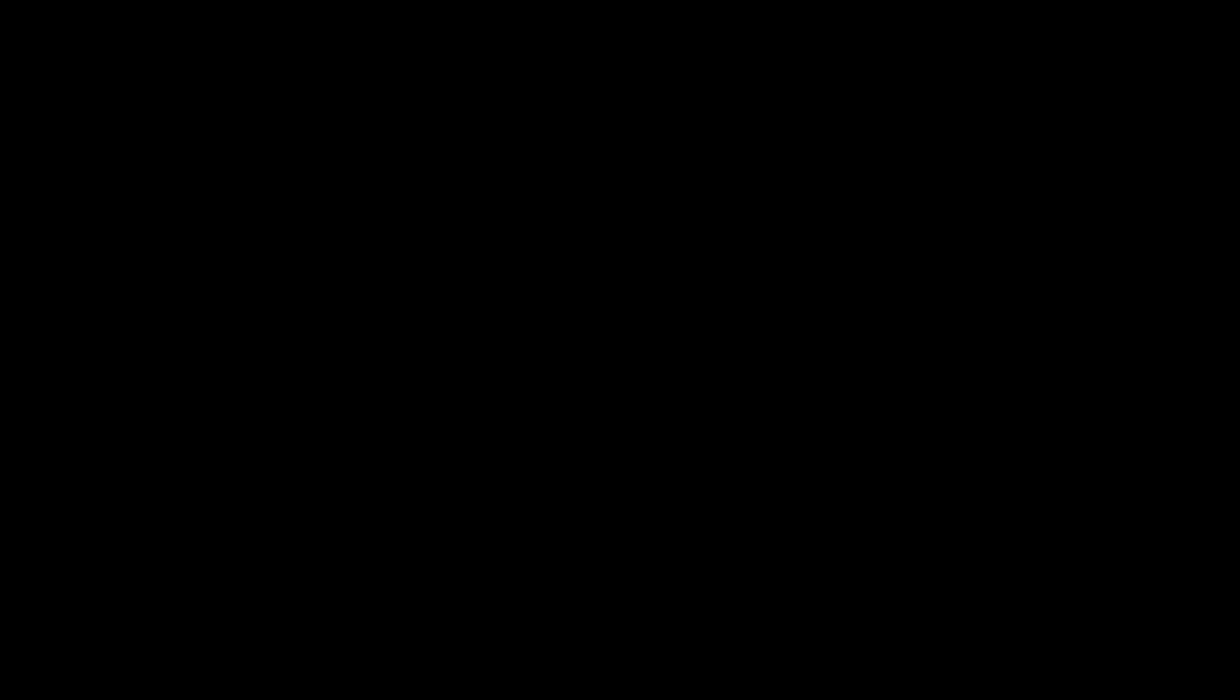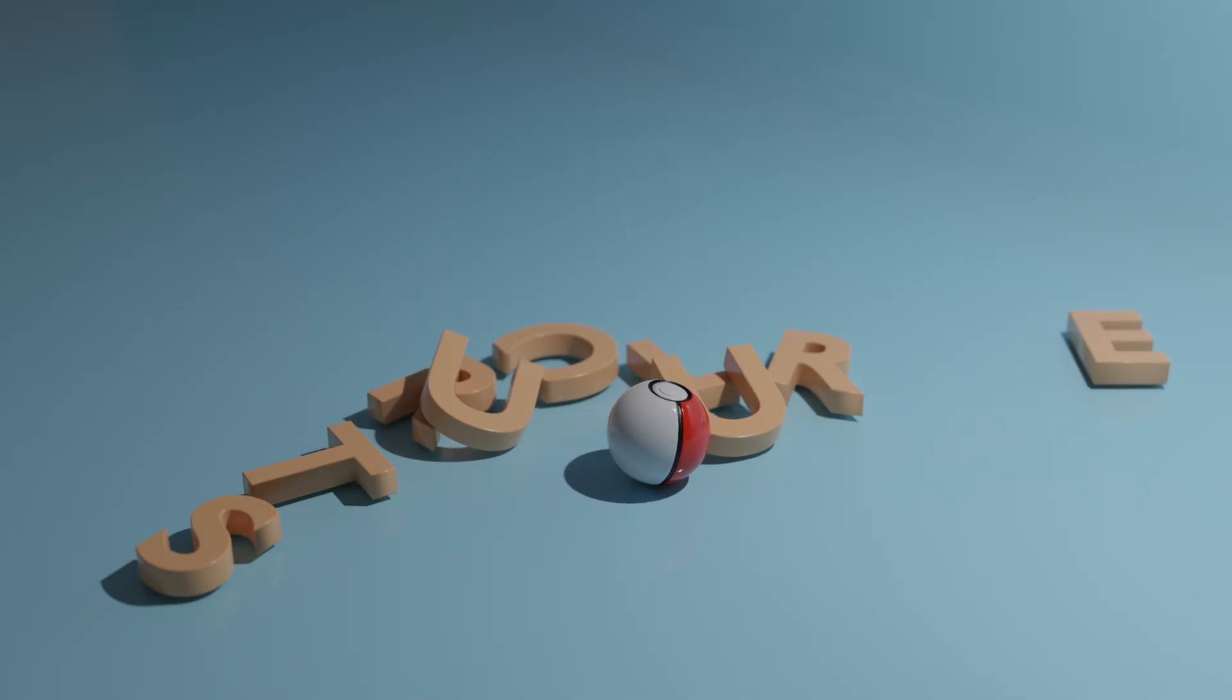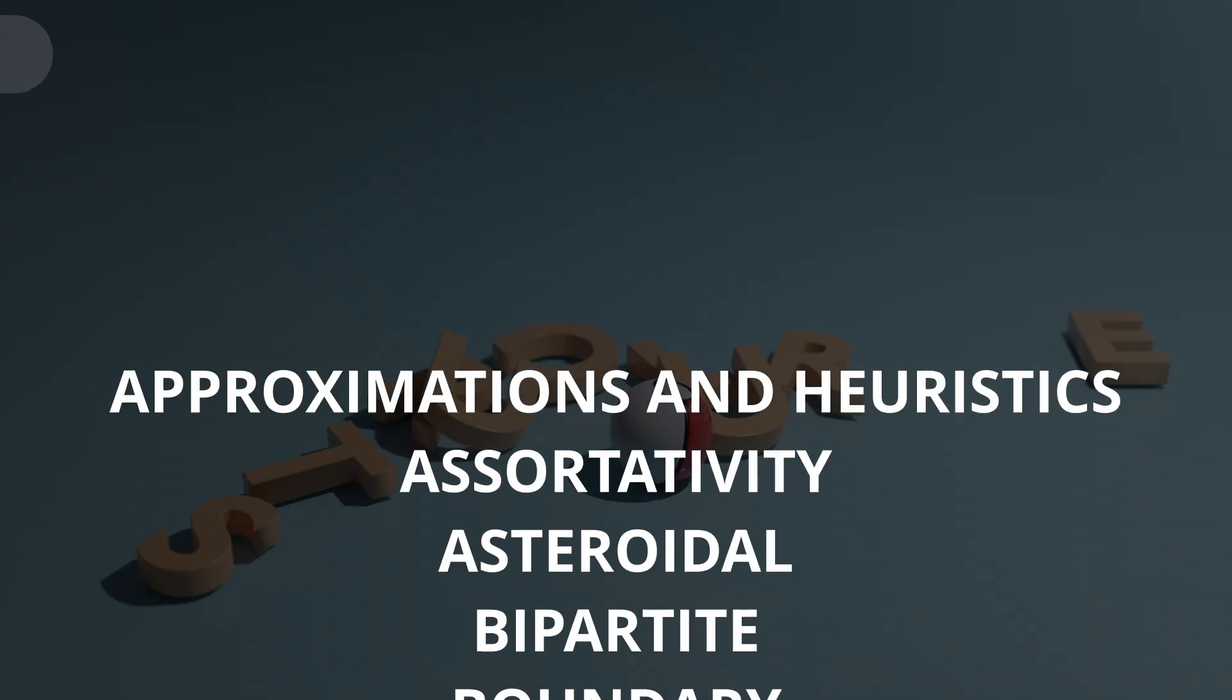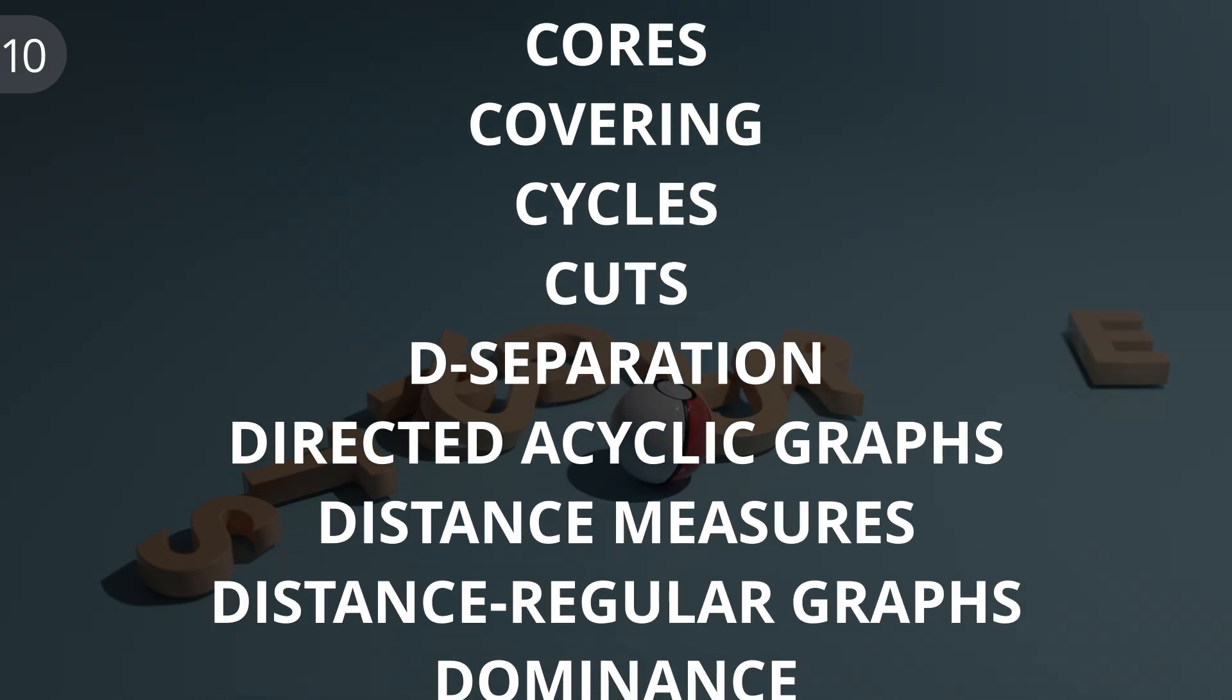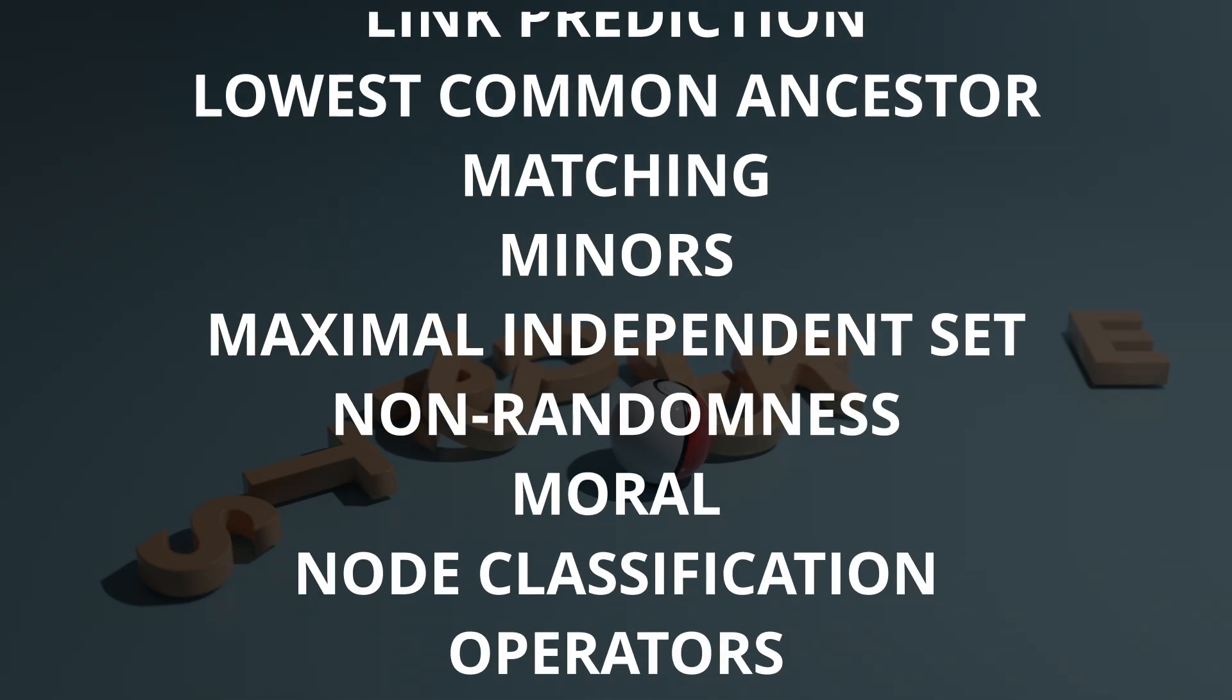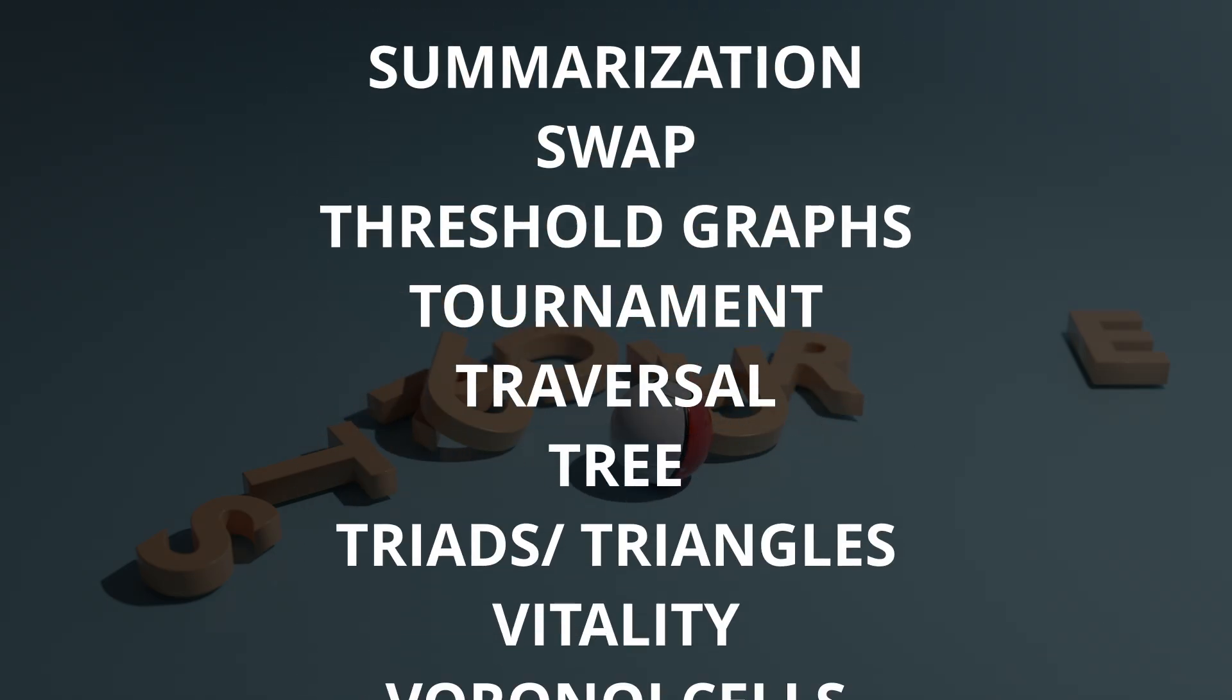Both network connectedness and degree distribution are in some way related to the structure of a network. This makes sense, as ultimately, understanding structure is the entire goal of network analysis. There are many, many ways to study the structure of networks, of course. So, because of the sheer number of techniques, I want to focus on one in particular, especially because it has a close connection to the Pokemon games.